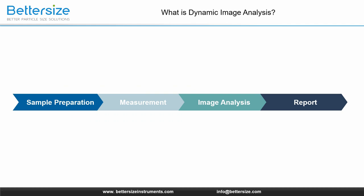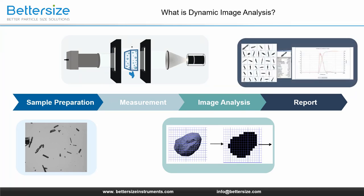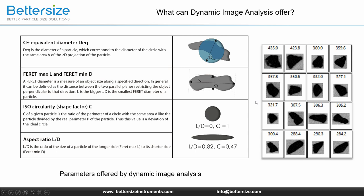However, laser diffraction does not provide information on particle shape or whether the calculated distribution corresponds to reality. So dynamic image analysis, another measurement method, can be used as a complementary system for particle size analysis. By counting the number of particles and the number of pixels contained in each particle projection, the equivalent circle area for each particle can be calculated. A complete dynamic image measurement includes sample preparation, measurement, image analysis, and report. It has the characteristics of being intuitive, visual, accurate, and having a wide measurement range. With dynamic image analysis, particle parameters including the equivalent area diameter, Feret max and min, circularity, and aspect ratio can be provided. It is a new particle sizing tool for research and production of powder materials.